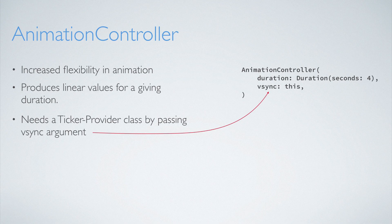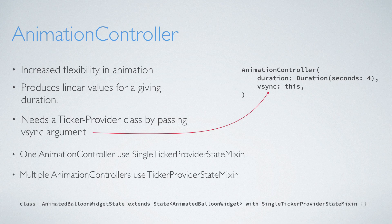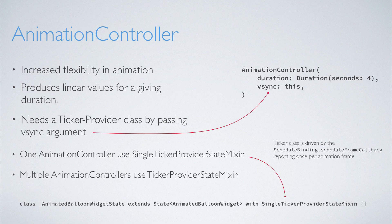If the animation needs only one animation controller, use SingleTickerProviderStateMixin. If the animation needs multiple animation controllers, use TickerProviderStateMixin. The ticker class is driven by the ScheduleBinding.scheduleFrameCallback, reporting once per animation frame. It is trying to sync the animation to be as smooth as possible.